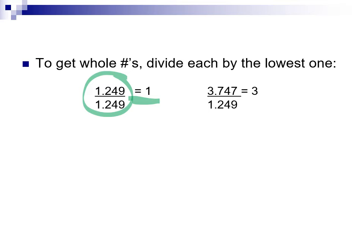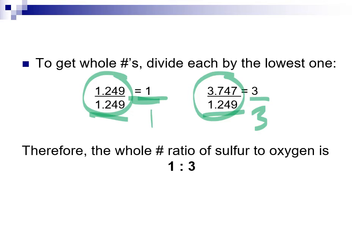Hopefully this works in one step — and this one did. We take the two molar amounts and divide by the smallest number. This gives us a 1-to-3 ratio, which you could see from the original numbers 1.249 and 3.747. Dividing by the smallest confirms a 1-to-3 ratio: one sulfur to three oxygens. Therefore the empirical formula is SO3. We took our percentages, went to mass, went to moles, and expressed that ratio as a whole number ratio.